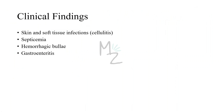Clinical findings: Vibrio vulnificus causes severe skin and soft tissue infections, for example cellulitis, especially in shellfish handlers who often sustain skin wounds. It can also cause a rapidly fatal septicemia in immunocompromised people who have eaten raw shellfish containing the organism. Hemorrhagic lesions in the skin often occur in patients with sepsis caused by Vibrio vulnificus. Chronic liver disease, such as cirrhosis, predisposes to severe infections, and this organism can also cause gastroenteritis.